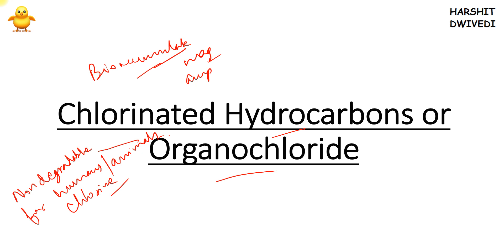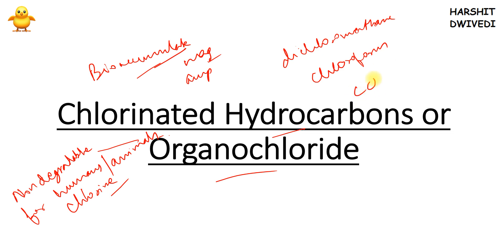Some examples of chlorinated hydrocarbons are dichloromethane, chloroform, and carbon tetrachloride (CCl4). You must have heard about these names — these are all chlorinated hydrocarbons and organochlorides.